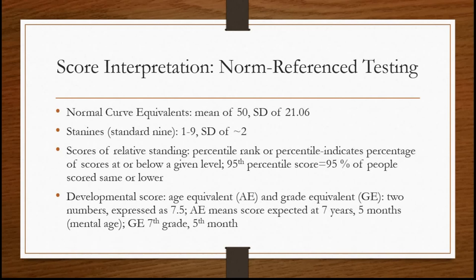If we talk about developmental scores, this is a little bit different — here we interpret scores in terms of either an age equivalent or a grade equivalent. The score is expressed as two numbers; for example, 7.5. As an age equivalent, that would mean the score is what we'd expect of someone who is seven years and five months old — we might also call that their mental age. As a grade equivalent, that would mean someone in the fifth month of the seventh grade. That's another form of norm-referenced test score interpretation.